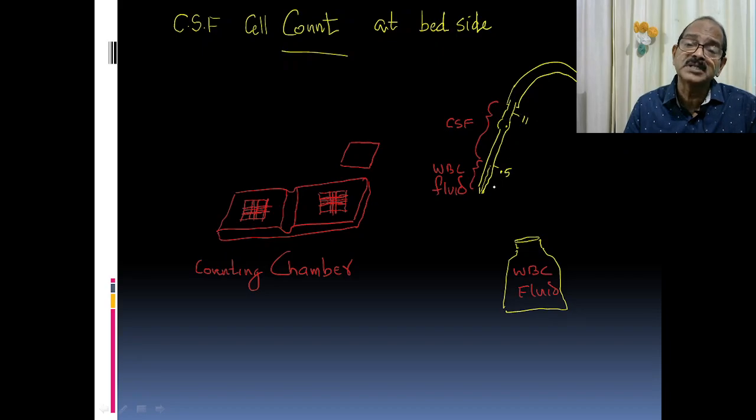For all practical purposes, it is CSF with very minimal dilution by the WBC fluid. The counting chamber has two parts; either can be used for counting. We place the coverslip over the chamber. The thickness of the fluid layer is 0.1 mm. We need to understand this marking.